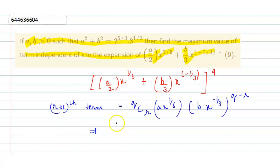so it implies that 9Cr a raised to the power r, b raised to the power 9 minus r, x raised to the power r/2 minus 3.